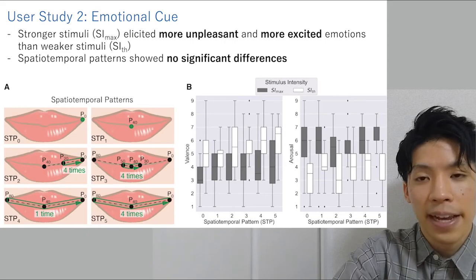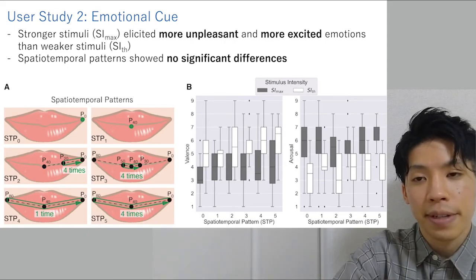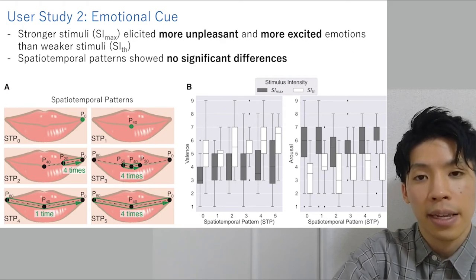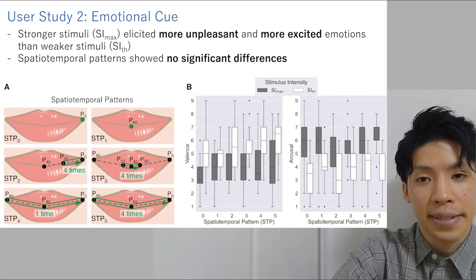In the second user study, we investigated the affective effect of different ultrasonic haptic cues on the lips. As a result, stronger stimuli elicited more unpleasant and more excited emotion than weaker stimuli. Spatiotemporal patterns showed no significant differences.